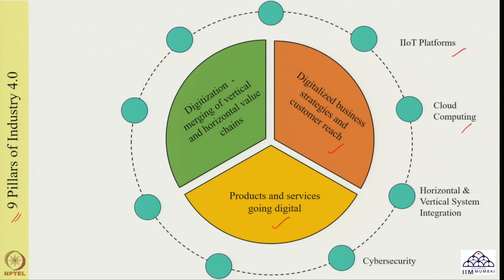The next technology is cyber security. Following a logical order: Internet of Things helps in capturing the data; cloud computing helps in sharing the data and making it available for everyone in the organization; horizontal and vertical system integration helps understand where data needs to be captured and how it should be shared. The next part is cyber security, which takes care of the computer systems, the software and the data being captured — how the safety and security of these things should be maintained. There is a lot of progress and development happening in this area, and the overall objective is that the systems being used and the data being generated are properly managed in terms of safety.